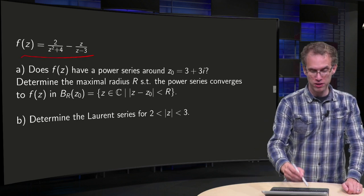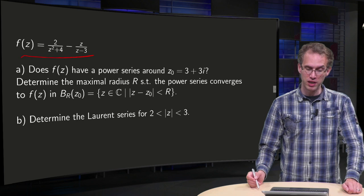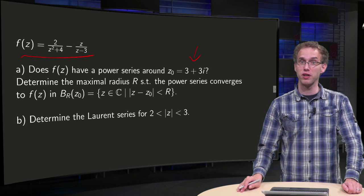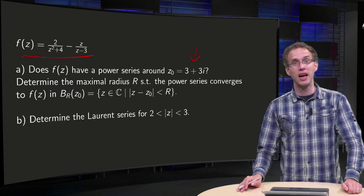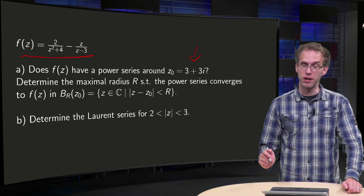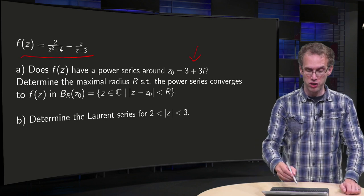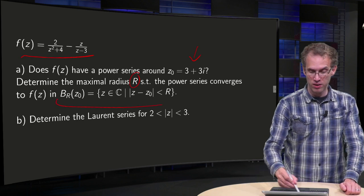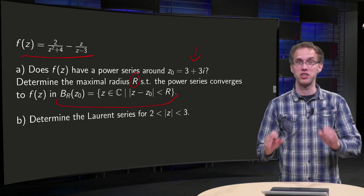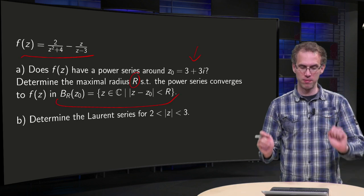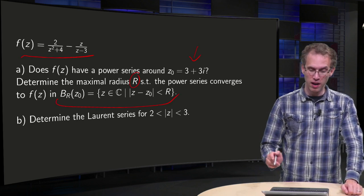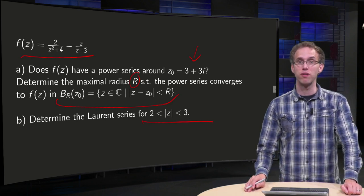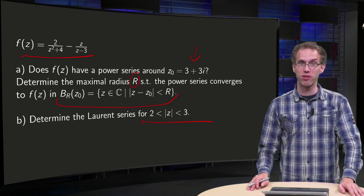We have a function f. Question a: does f have a power series around z₀ equals 3 plus 3i? And if it does, find the maximal radius r such that the power series converges to f in the open disk around z₀. Question b: determine the Laurent series of this function for the norm of z between 2 and 3.